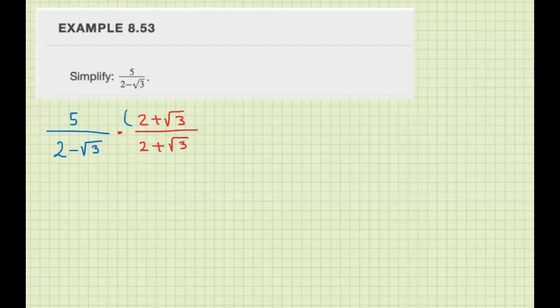So we're going to put everything in parentheses so we can multiply. So on top, we get five times two plus square root of three. On the bottom, we FOIL.